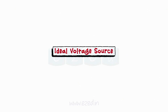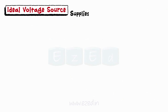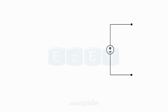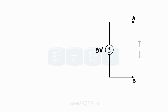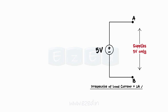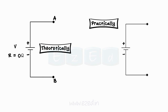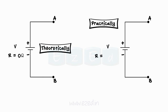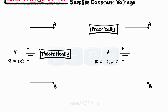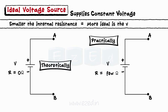The ideal voltage source supplies constant voltage irrespective of the change in load current. Thus, an ideal voltage source of 5 volts will supply exactly 5 volts whether the load current is 1 ampere, 100 amperes, or 1 milliampere. The resistance of the ideal voltage source is 0 ohms, but in practice a small resistance is always present. Therefore, the smaller the resistance, the more ideal the voltage source.